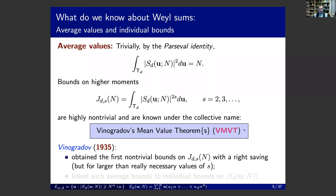We call it Vinogradov's mean value theorem because Vinogradov, in 1935, obtained the first non-trivial bounds on this quantity J_{d,s}(n) with the right saving. He achieved this right saving for values of s slightly higher than one would expect. He also linked these average bounds to individual bounds, obtaining first non-trivial results which for large d were much stronger than the result of Hermann Weyl.